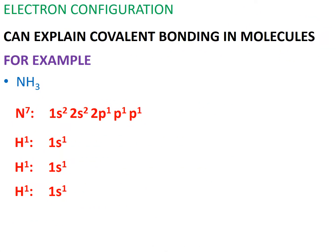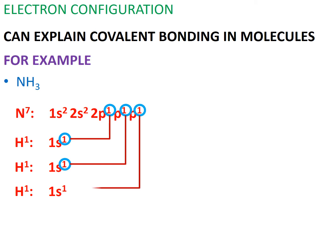Now we can see that nitrogen will form three covalent bonds with three hydrogen atoms. One of its unpaired electrons pairs up with the first hydrogen's unpaired electron, another pairs up with the second hydrogen's unpaired electron, and the other unpaired electron in nitrogen pairs up with the third hydrogen's unpaired electron. Remember that a covalent bond is the pairing up of unpaired electrons to form a shared pair of electrons.